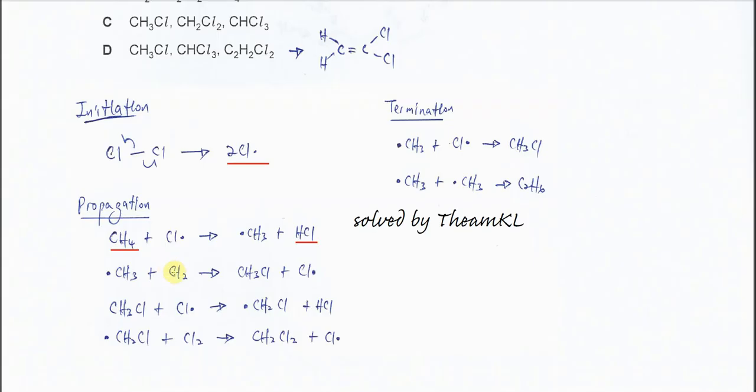You get one chlorine from this to form CH3Cl and the chlorine radicals regenerate. Now the chlorine radicals are going to attack the first product, the CH3Cl, and get another hydrogen from it to form another HCl. So now it forms a CH2Cl radical.